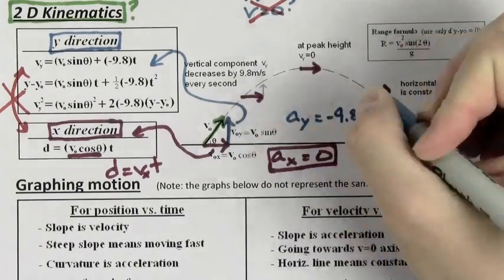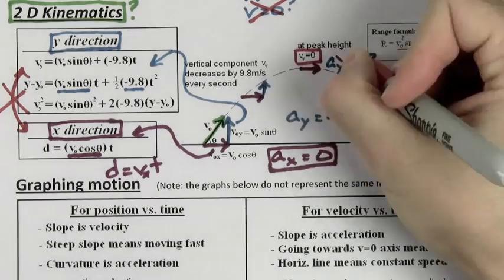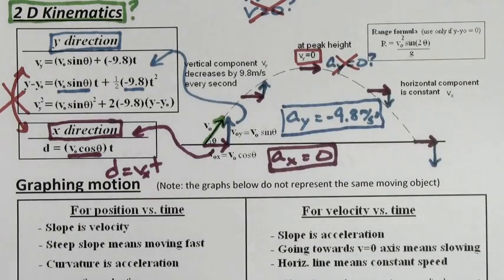The acceleration in the Y direction is negative 9.8 meters per second squared. That means the vertical velocity is always changing. That's why you've got to use the kinematic formulas for the Y direction. At the peak height, the velocity in the Y direction is zero. Is the acceleration in the Y direction zero? No, the acceleration in the Y direction is always negative 9.8 meters per second squared.